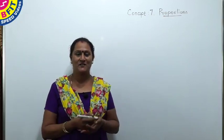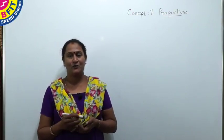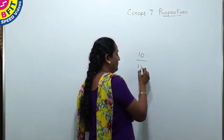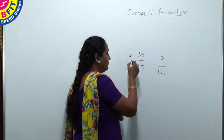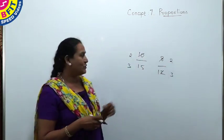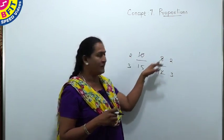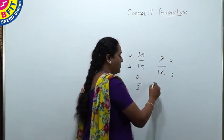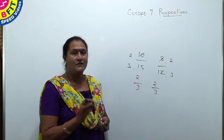We will see the next concept: proportions. When two ratios are equivalent, they are said to be in proportion. For example, 10/15 and 8/12 — when simplified, both equal 2/3. After cancelling the common factor 5 from 10/15, and common factor 4 from 8/12, we get 2/3 in both cases. So whenever two fractions are equivalent, they are said to be in proportion.